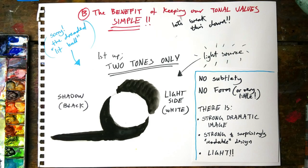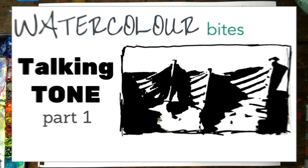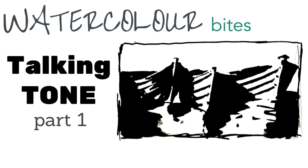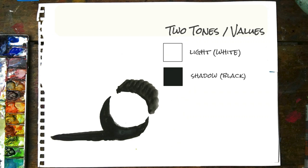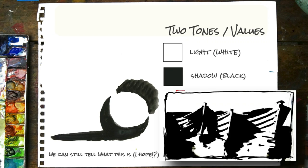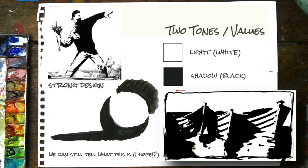So we've already seen in the last video the benefit of using very simple tones to not only analyse our subject but also in practical application in an artwork. We saw that using only two tones — black for shadow, white for light — we could create a very readable image and even create a very powerful and impactful piece of art.